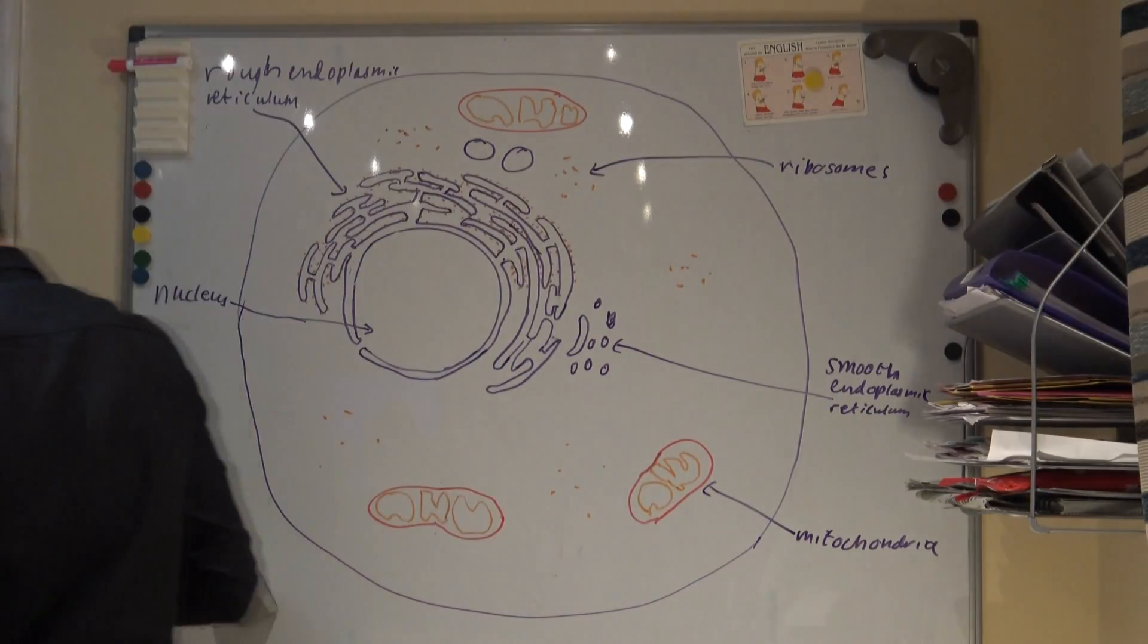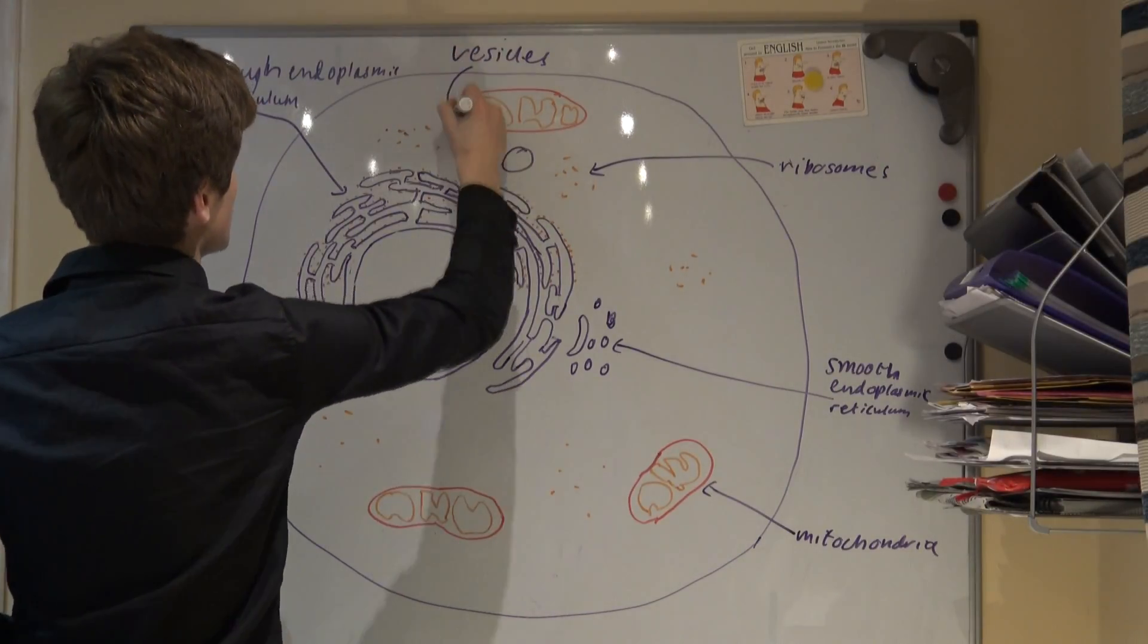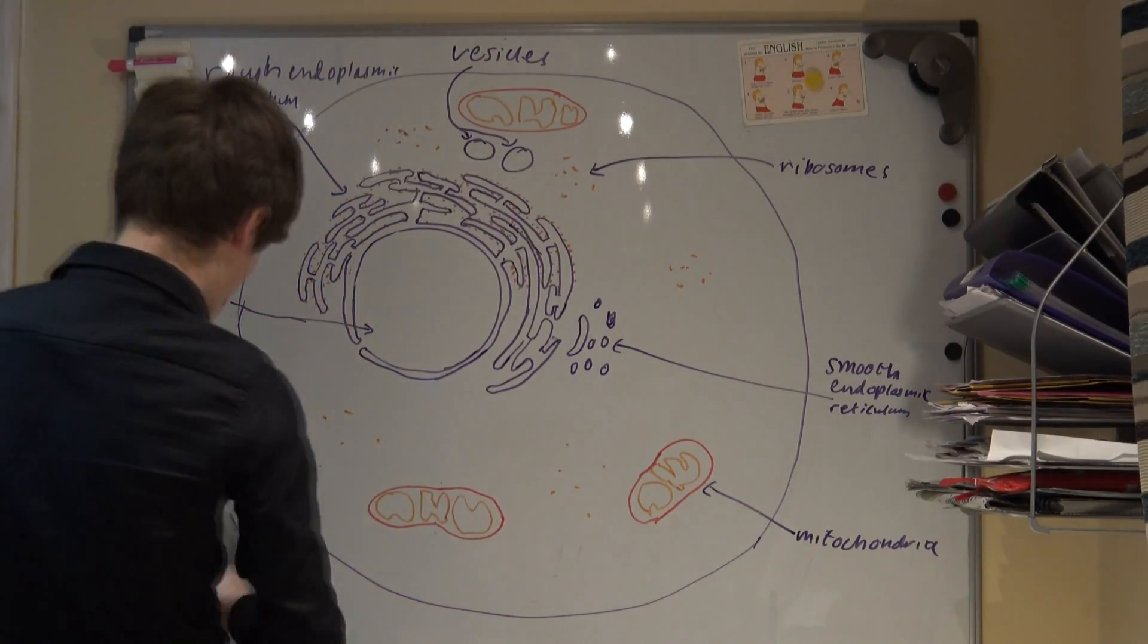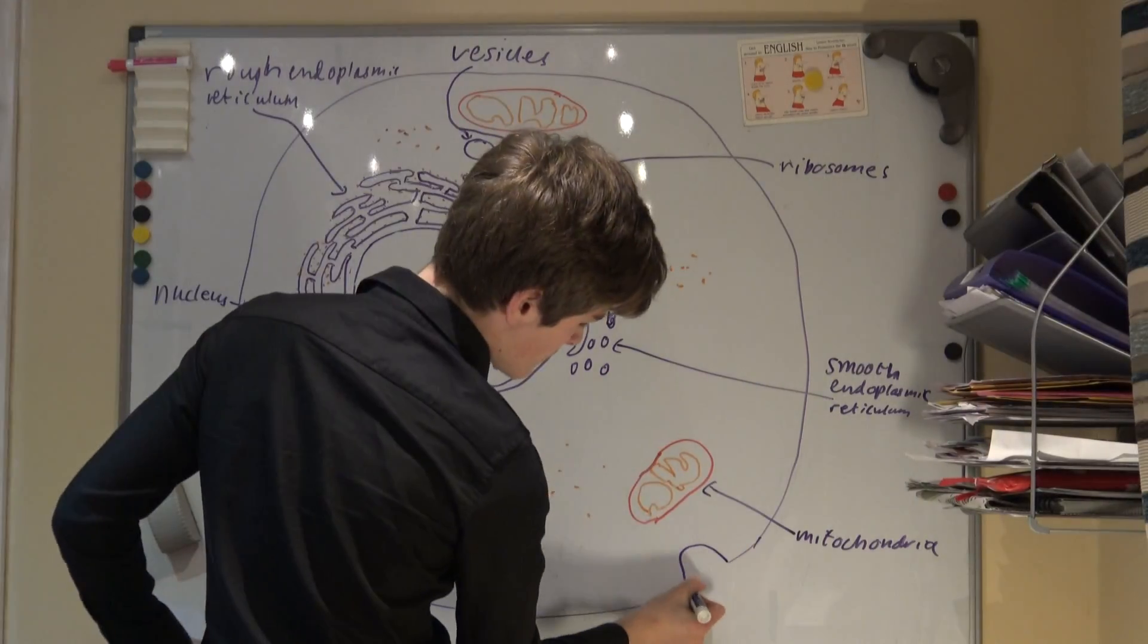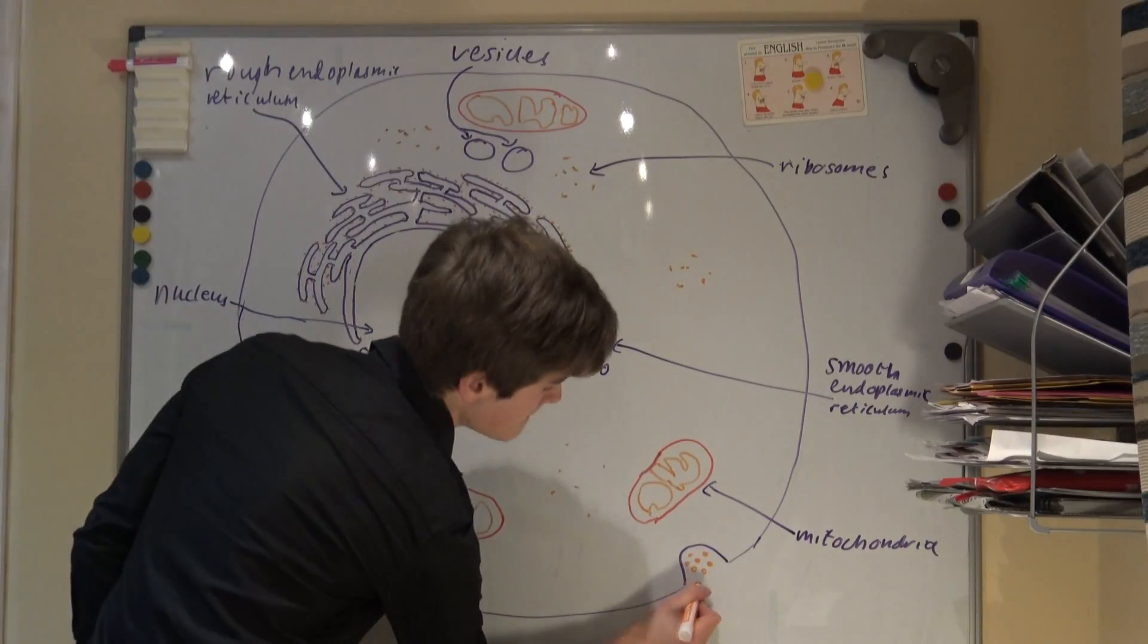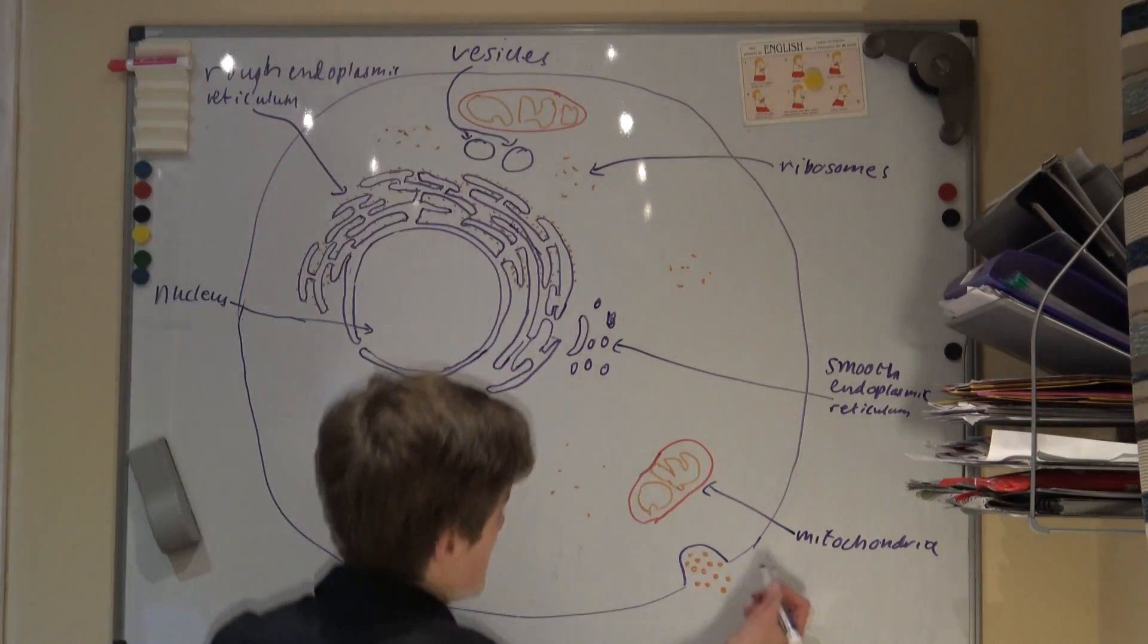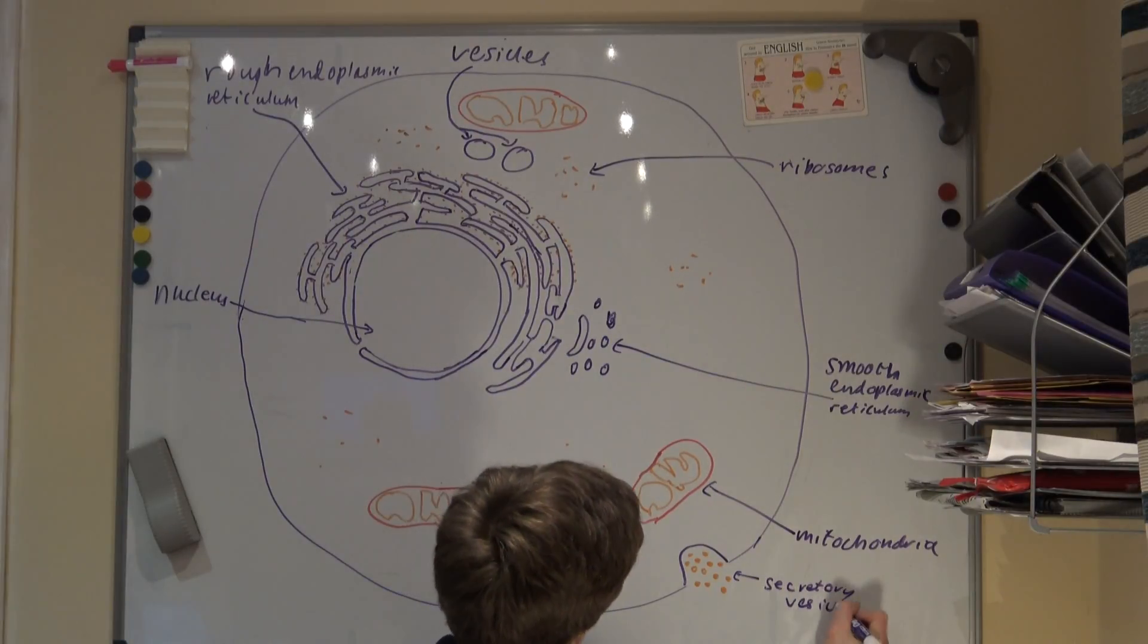Another type of organelle is the vesicle. These are membranous sacs that have storage and transport roles. They consist of a single membrane with fluid inside. Lysosomes are specialized forms of vesicles that contain hydrolytic enzymes. They are responsible for breaking down waste material in a cell, including old organelles. They are very important to the immune system as they are used to break down pathogens ingested by phagocytic cells.